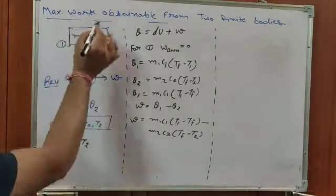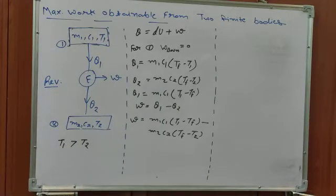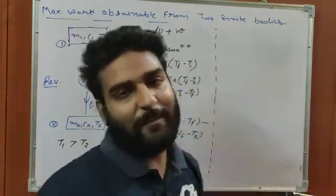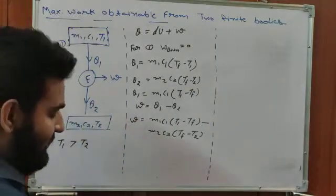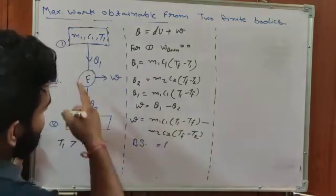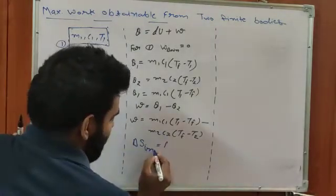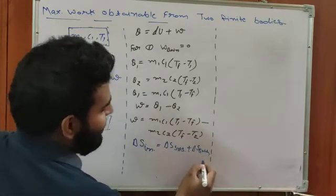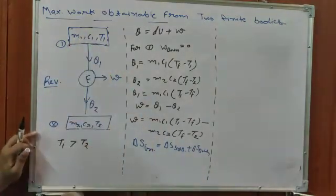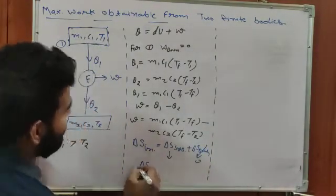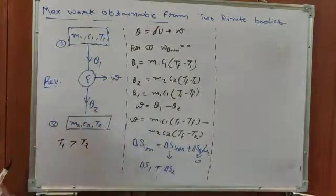We want maximum work, not just the work. For maximum work, we go into the concept of entropy change for the system. The entropy change for the universe equals entropy change for the system plus entropy change for the surroundings. There is no entropy exchange with the surroundings here, so that term is zero. We can write: entropy change for universe equals entropy change for system 1 plus entropy change for system 2.